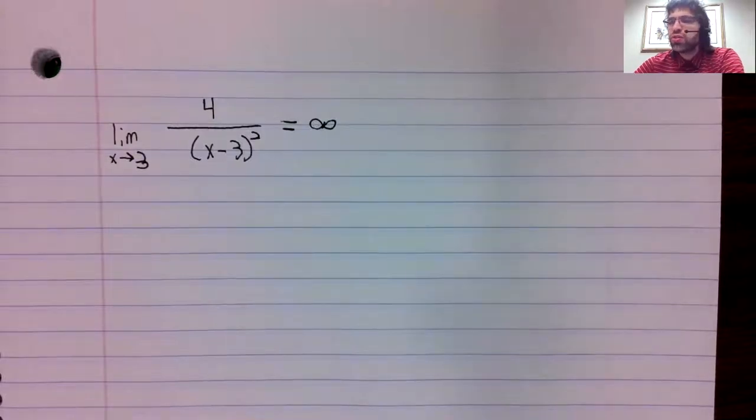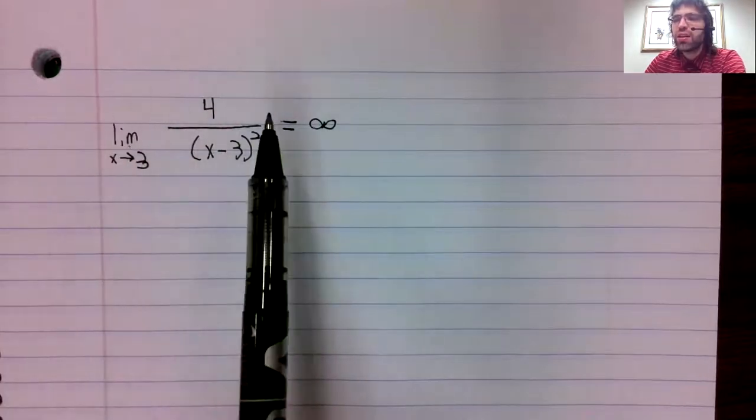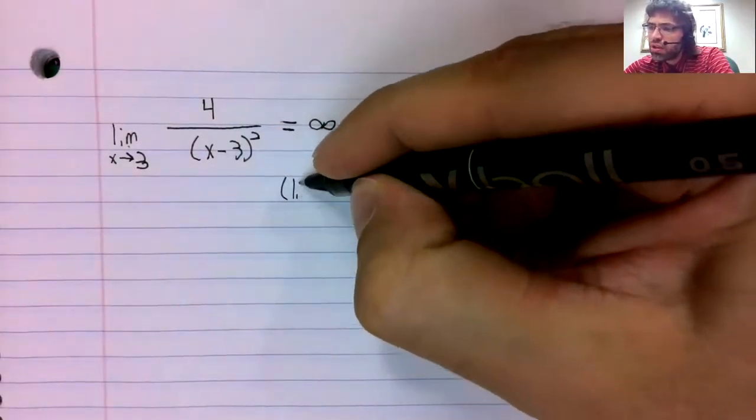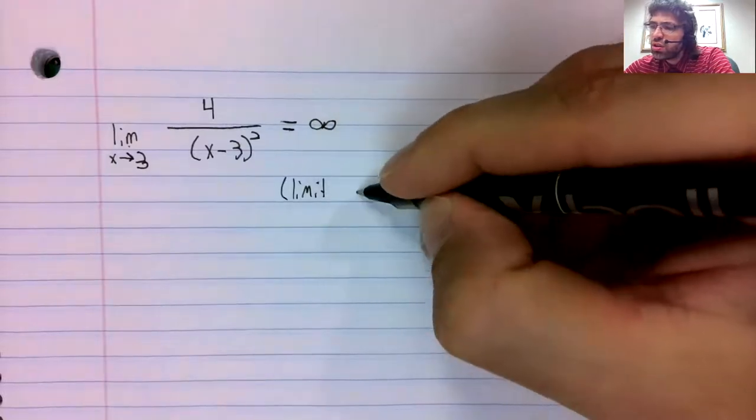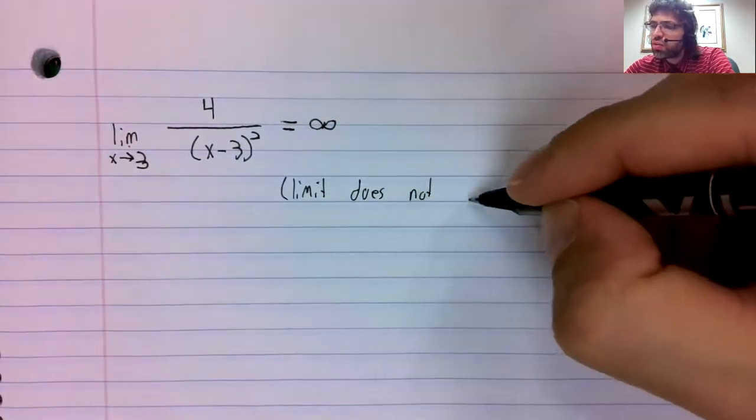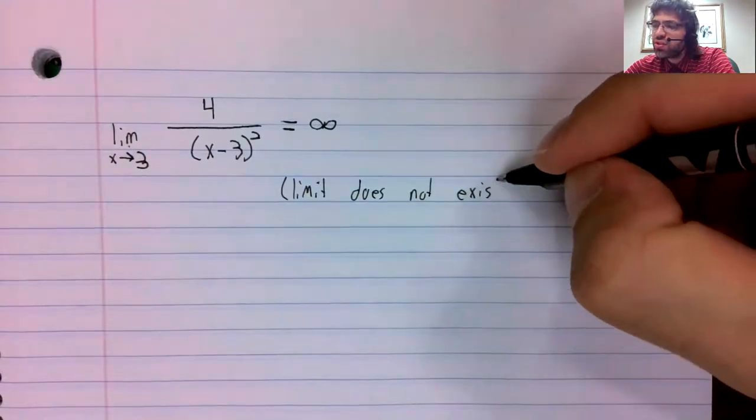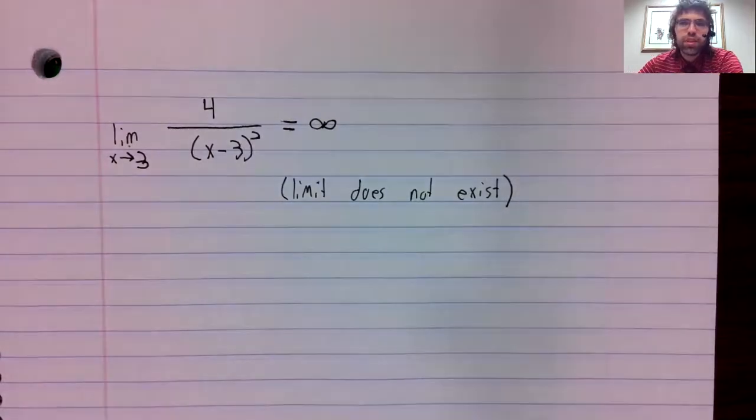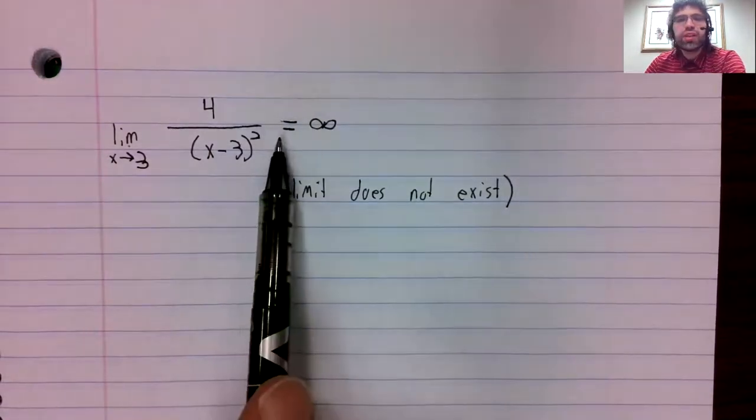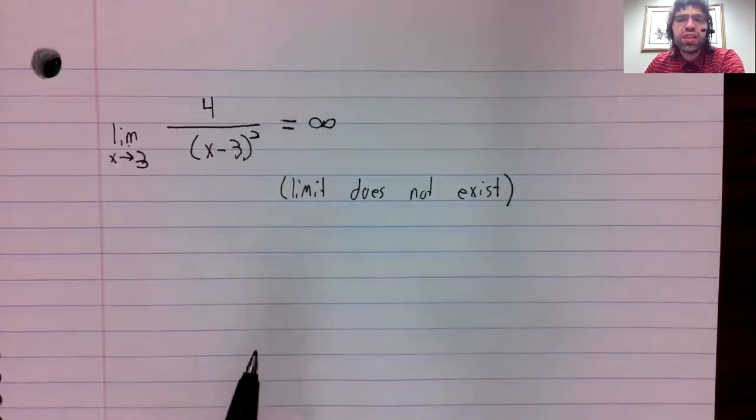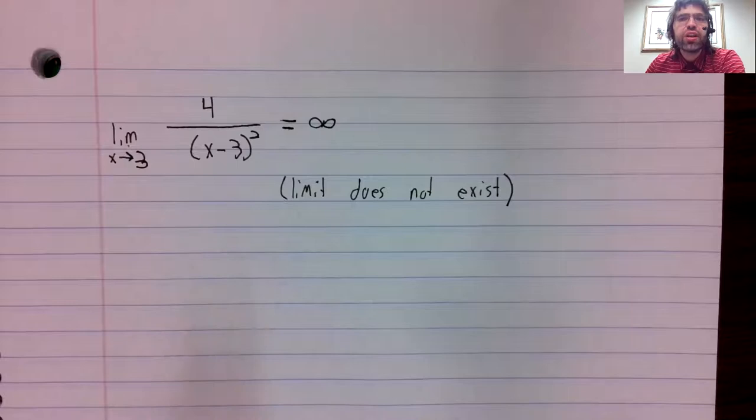Reiterating something I just said, I know we've written that the limit equals something, but this limit does not exist. So this notation says that the limit doesn't exist, but it doesn't exist in a specific way.